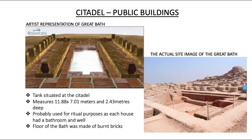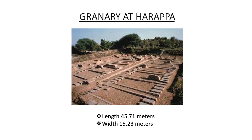Water from the tank flowed into a huge drain, showing emphasis on regularly cleaning the tank. The large well provided water for it. Towards the north there was a smaller building with eight bathrooms — four on each side of a corridor — with drains from each bathroom connecting to a drain along the corridor. Historians generally agree it was used for ritual bathing. Each house in Mohenjo-daro had a well and a bathroom. A large brick structure indicates surplus production.